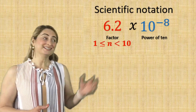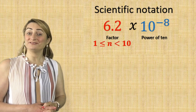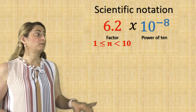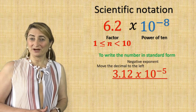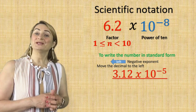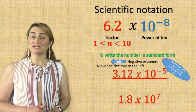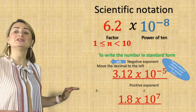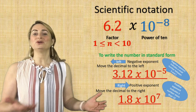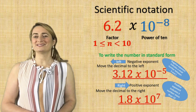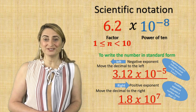In conclusion for today's lesson, scientific notation has a factor equal to or more than 1 and less than 10, multiplied by a power of 10. To write those numbers in standard form: for example, 3.12 times 10 to the power of negative 5 — if you have a negative exponent, move the decimal to the left because negative exponent means a small number between 0 and 1. But if you have 1.8 times 10 to the power of 7 with a positive exponent, move the decimal to the right because positive exponents mean big numbers. You don't have to memorize anything if you know that going left makes numbers smaller and going right on the number line makes numbers bigger. That's it for today's lesson. Thank you for watching, subscribing, and commenting on my videos. Have a great day, see you next time.